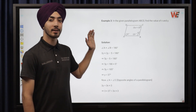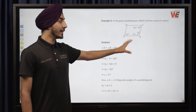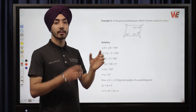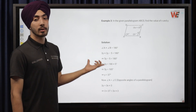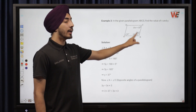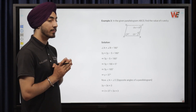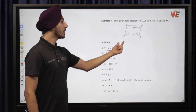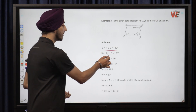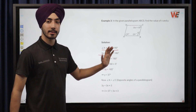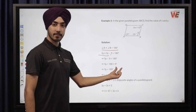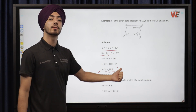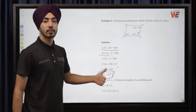The last question: parallelogram ABCD is given. Find the values of X and Y, where the angles contain variables. Angle A is 3Y and angle B is 2Y minus 5. Since adjacent angles are supplementary, 3Y plus (2Y minus 5) equals 180 degrees. Combining like terms gives 5Y minus 5 equals 180, then 5Y equals 185, so Y equals 37 degrees.